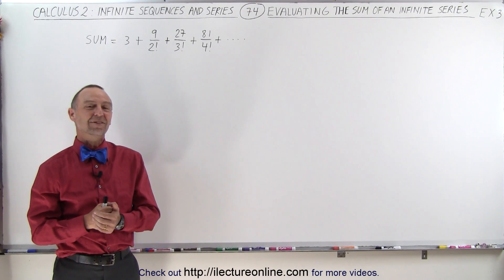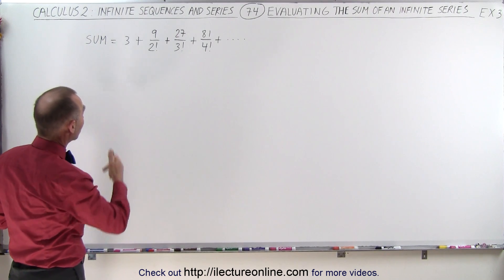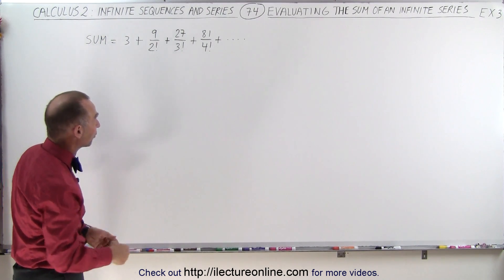Welcome to my lecture online. Now let's try our hand on this one here. We're trying to find the sum of 3 plus 9 over 2 factorial plus 27 over 3 factorial and so forth.